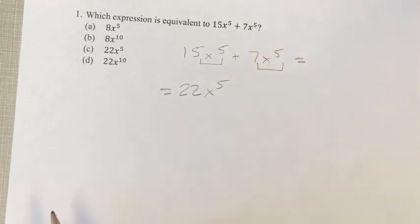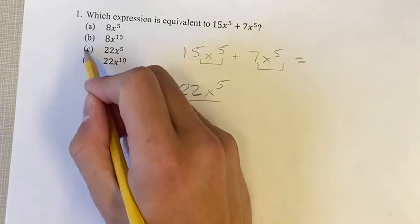So again, you're adding the numbers out in front, and you're keeping the variable the same. This will line up with answer C.